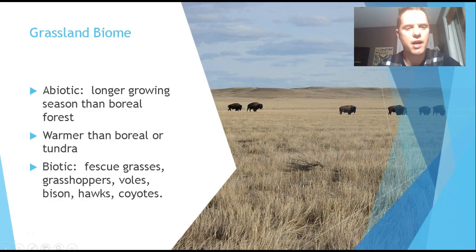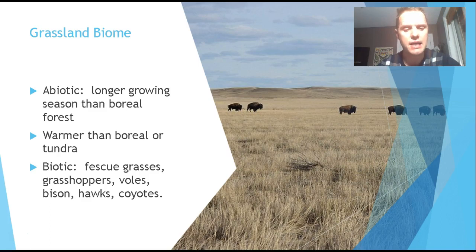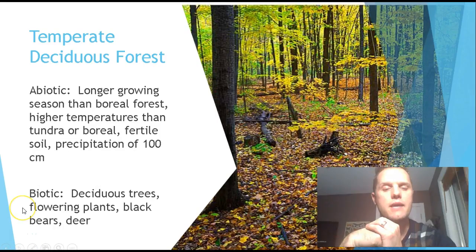The grassland biome of Saskatchewan, Alberta, and a bit of Manitoba features abiotic characteristics that include a longer growing season than the boreal forest and warmer temperatures than the boreal or tundra. This results in fescue grasses — similar to decorative grasses you'd grow in a garden — and also supports grasshoppers, voles, bison, hawks, and coyotes.